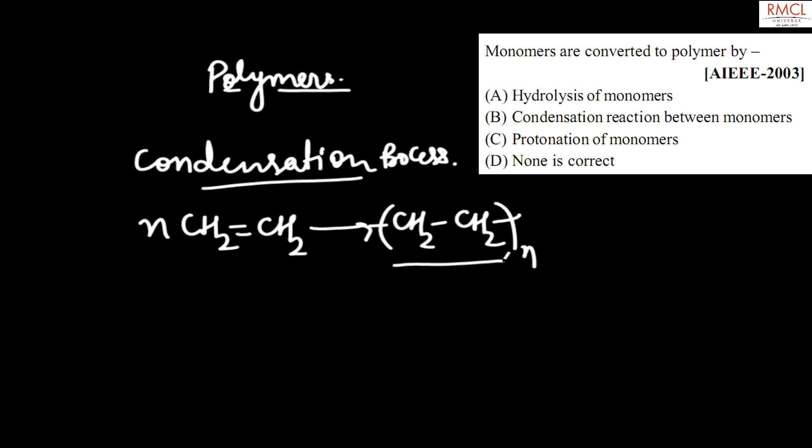So sometimes smaller groups are released in condensation process like H2O, ammonia, ROH, etc. So the correct option for this question is option B.